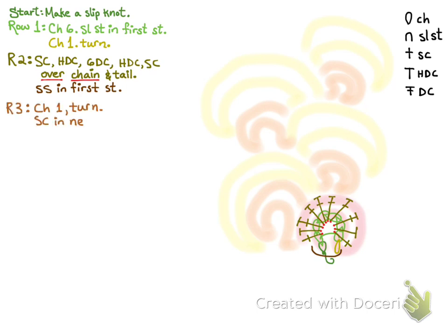For row three, chain one and turn. And then single crochet into the next two stitches. For row four, chain three and turn. And then slip stitch into the next stitch.